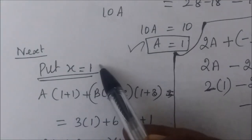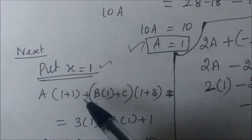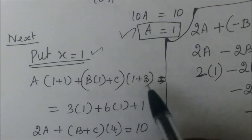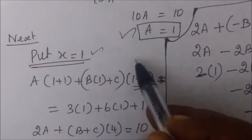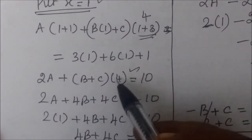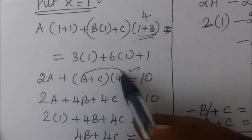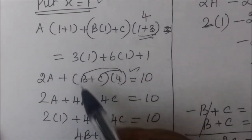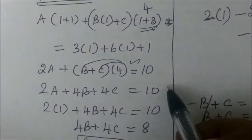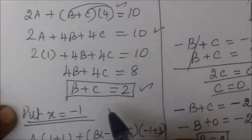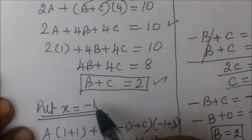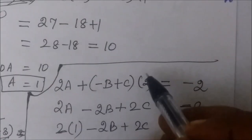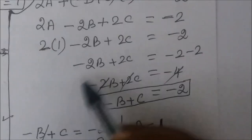That means we need to put any number — put x equal to 1. If we have a short term, put x equal to 1. So let's put x equal to 1. Students are making mistakes here only. If you want to add to each term, you can add 4 to each term.